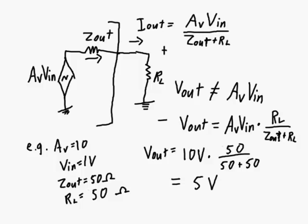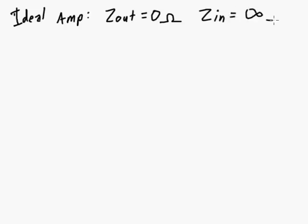So one last thing I want to do, let's clear the screen here, is look at an overall effect of Z in and Z out together. So an ideal amplifier, for an ideal amplifier, you would want your Z out to be 0 ohms and your Z in input impedance to be infinite ohms.